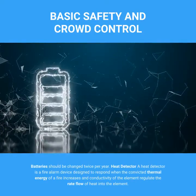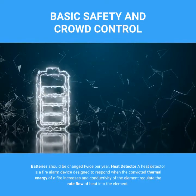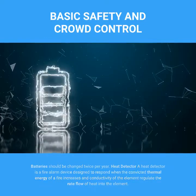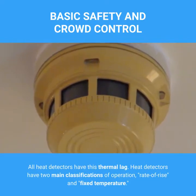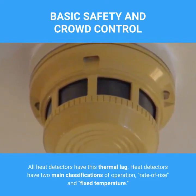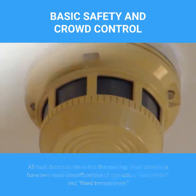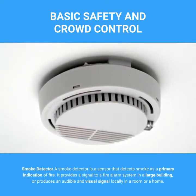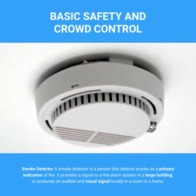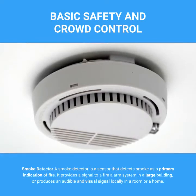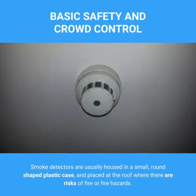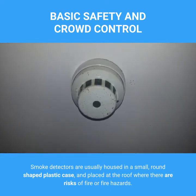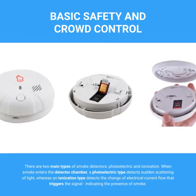Heat detector: A heat detector is a fire alarm device designed to respond when the convected thermal energy of a fire increases; conductivity of the element regulates the rate of heat flow into the element. All heat detectors have this thermal lag. Heat detectors have two main classifications of operation: rate of rise and fixed temperature. Smoke detector: A smoke detector is a sensor that detects smoke as a primary indication of fire. It provides a signal to a fire alarm system in a large building or produces an audible and visual signal locally in a room or home. Smoke detectors are usually housed in a small, round-shaped plastic case placed at the roof where there are risks of fire or fire hazards. There are two main types: photoelectric and ionization.